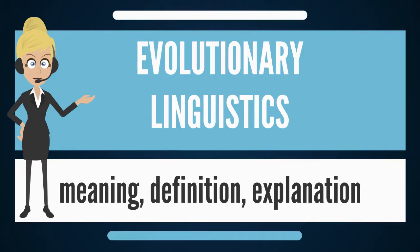Evolutionary linguistics as a field is rapidly emerging as a result of developments in neighboring disciplines. To what extent languages' features are determined by genes — a hotly debated dichotomy in linguistics — has had new light shed upon it by the discovery of the FOXP2 gene. An English family with a severe, heritable language dysfunction was found to have a defective copy of this gene.